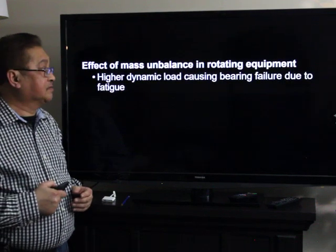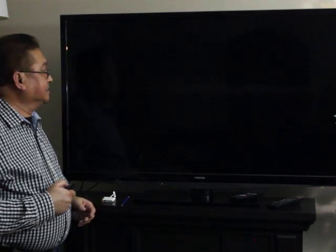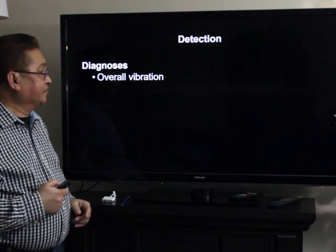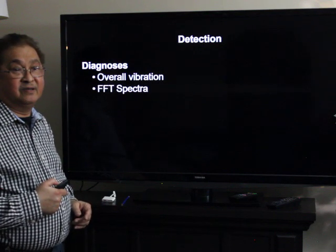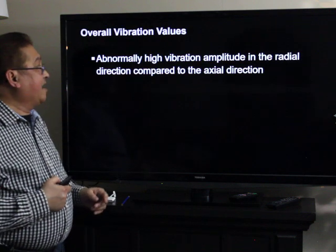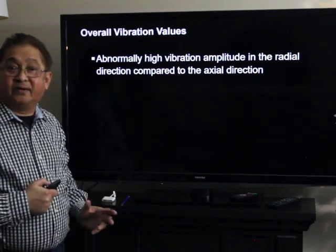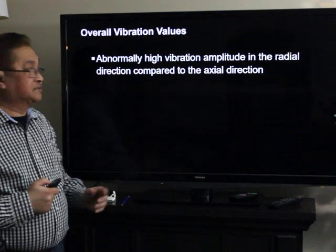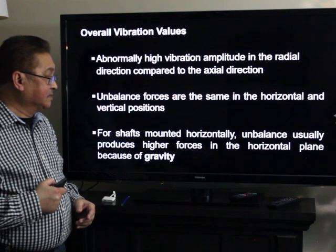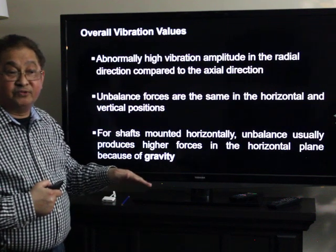The effect of mass unbalance in rotating equipment is higher dynamic load, causing bearing failure due to fatigue. For detection and diagnosis, there are three methods: overall vibration readings, fast Fourier transform spectra, and phase measurement. For overall vibration values, there will be higher vibration amplitude in the radial direction compared to the axial, because the centrifugal force acts radially. For shafts mounted horizontally, unbalance usually shows higher readings in the horizontal plane, since vertical motion is restricted by gravity.